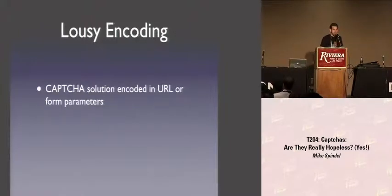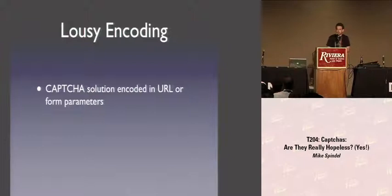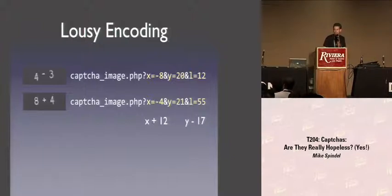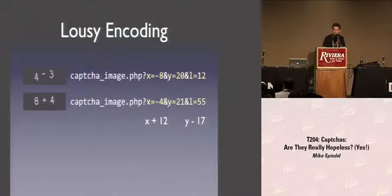Another common problem in low-end CAPTCHAs is lousy encoding — for example, the solution of the CAPTCHA is included in a form parameter encoded in ROT13, usually done in the name of mythical horizontal scalability because the server doesn't want to remember the solution. Here's an actual example from a web page with reasonable traffic: the CAPTCHA asks you to solve a simple arithmetic problem. There's an X, Y, and operation, but the image URL has three fields. It turns out if you add 12 to X and subtract 17 from Y in the URL, you get the actual CAPTCHA operation.